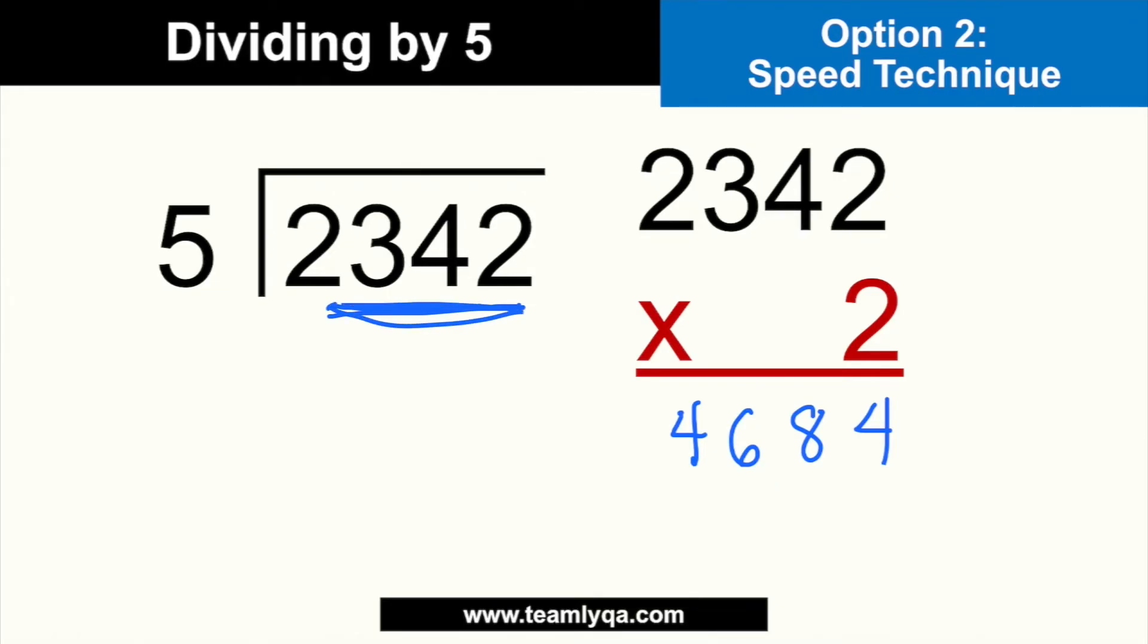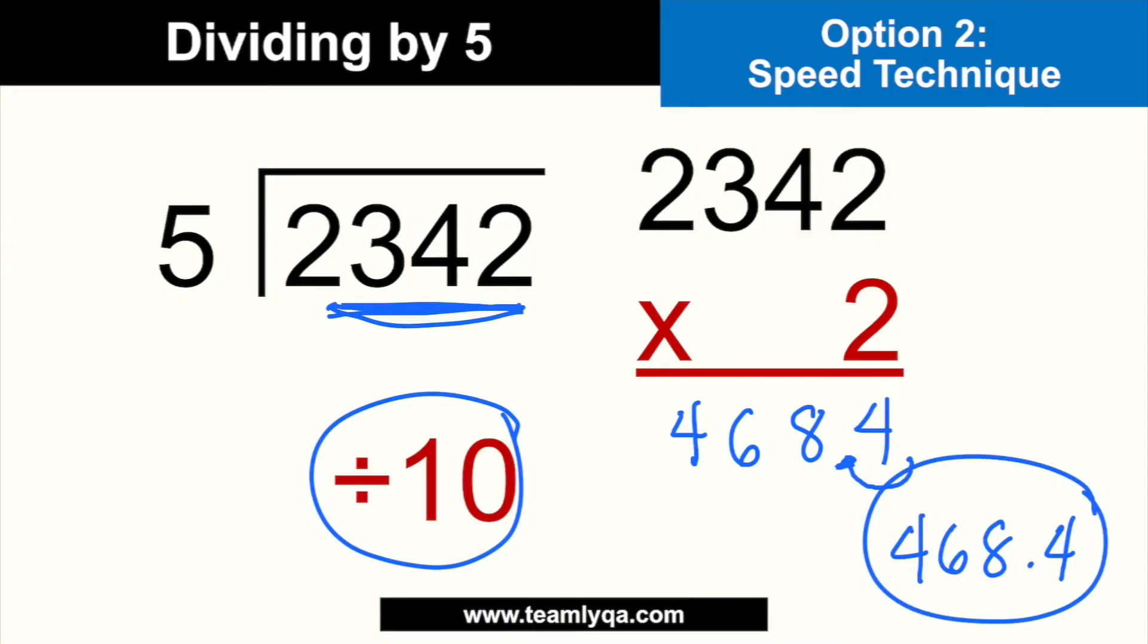So, again, tinimes 2 ko lang yung number na nasa loob. Now, familiar ba sa inyo? Familiar na, right? Kasi nakita na natin yan kanina. Pero, hindi na tatapos dun sa times 2. What you're going to do next is to divide it by 10. And yung divide by 10, hindi nyo kailangan problemahin yan. Kasi all you have to do is to move the decimal place one time. So, the answer is 468.4. And it's the same as yung answer natin kanina. Now, in my opinion, this is actually faster. And that has helped me with a lot of the exams that I took before.